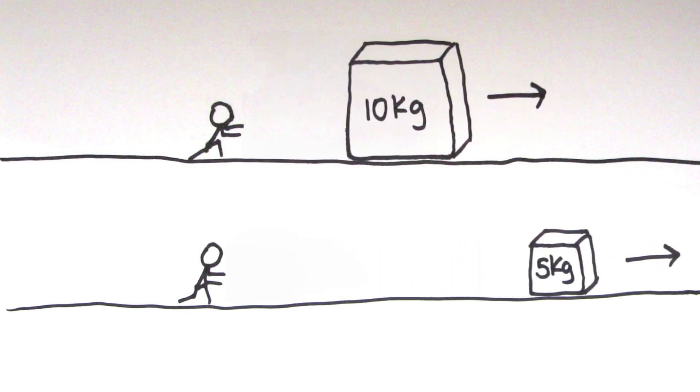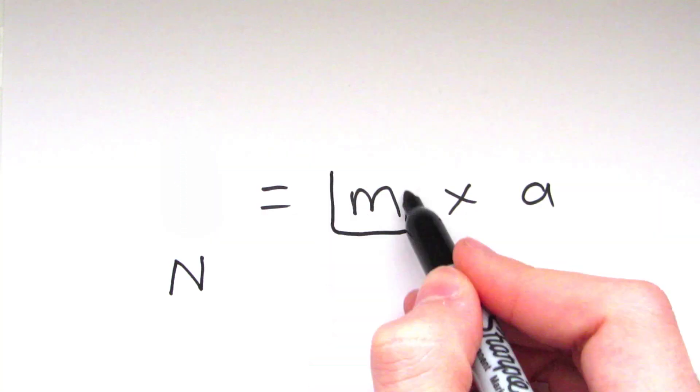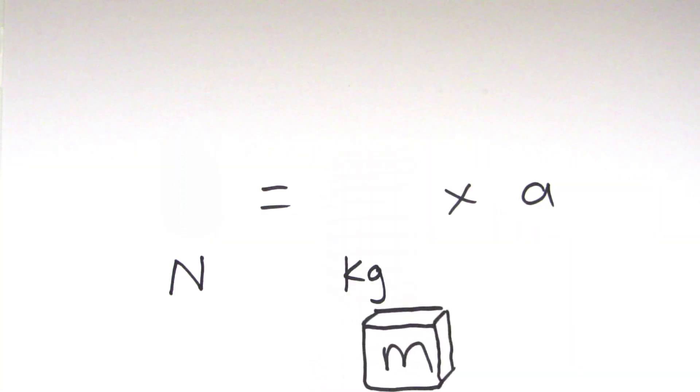The relationship between these variables can be shown by the equation F equals m times a, where F is the resultant force in newtons, M is the mass in kilograms, and A is the acceleration of the object in meters per second squared.